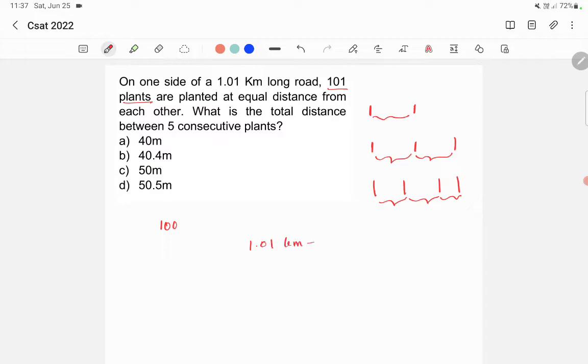1.01 kilometers equals 1.01 times 1000 meters, which gives us 1010 meters.